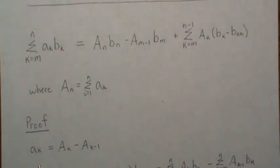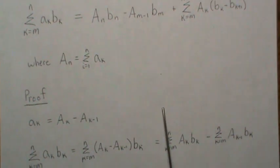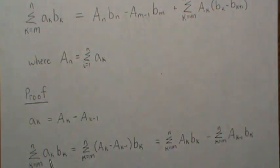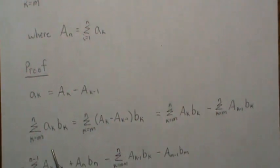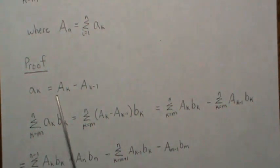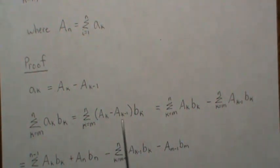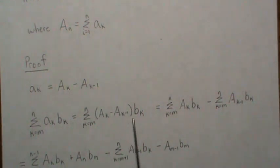We're going to start with this and show it equals that. So here is this part, and then we're going to replace a_k with this difference, and then we're going to distribute the b_k.